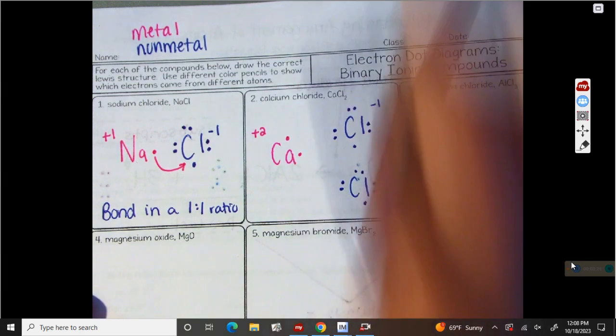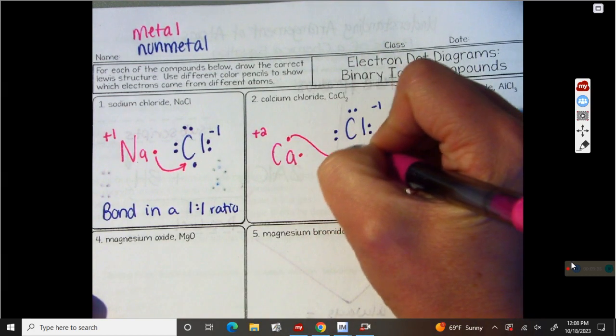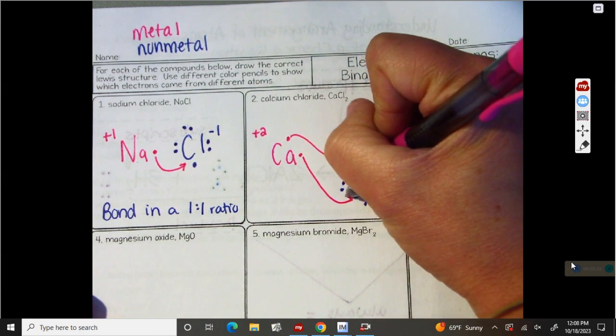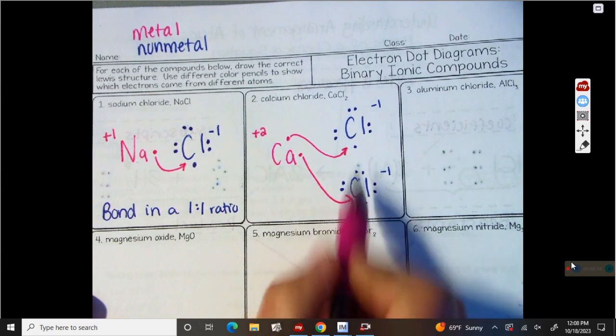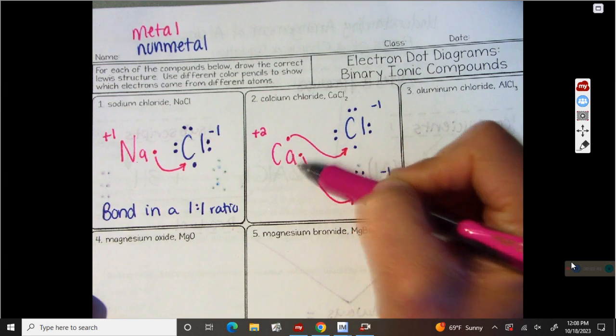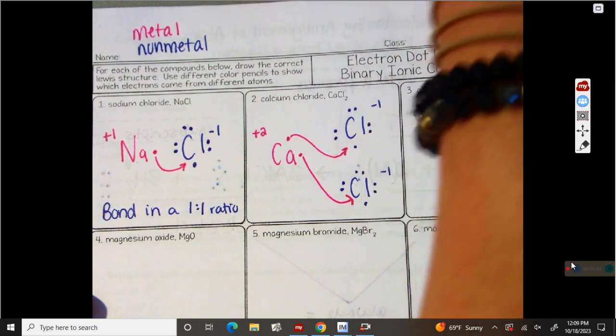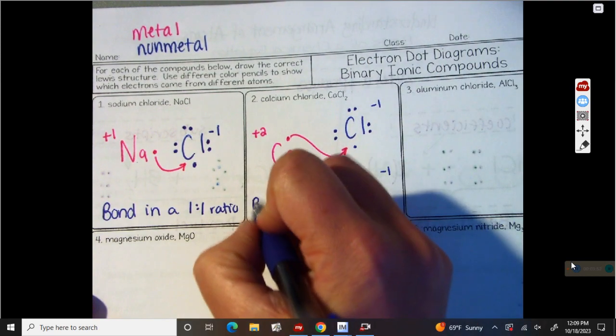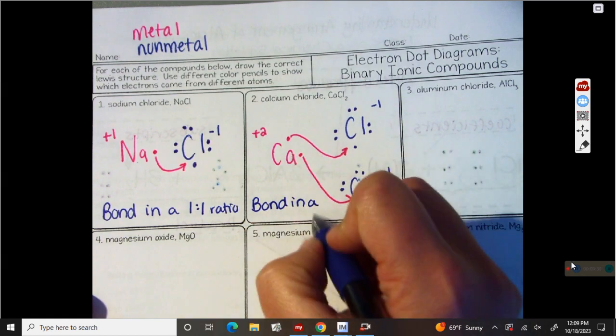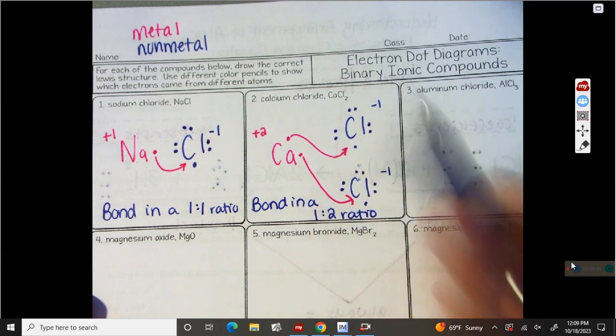So what I need to do is I need to make these two valence electrons that want to be transferred find a spot. So this one is going to come down here and this one is going to come down here. And now you can see calcium is happy. It's gotten rid of its two electrons and these two chlorines are now full. So the reason we needed two chlorines is we had this metal that wanted to get rid of two valence electrons. If chlorine only needs one and we're going to bond, then I have to have two of them. So they bond in a one to two ratio. Because for every one calcium, I need two chlorines.